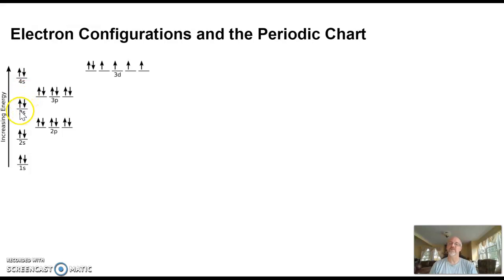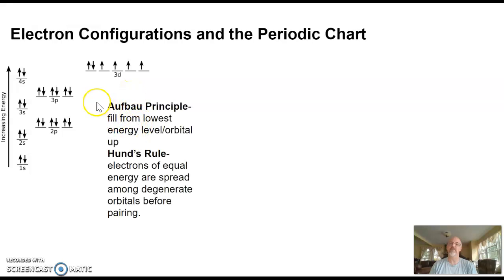This is called the Aufbau principle. Aufbau is German for building up. As we go up, we continue to fill until we run out of electrons. In this case, you notice the 3d orbitals—one of them is partially filled, so there are six electrons in this 3d orbital for this element.